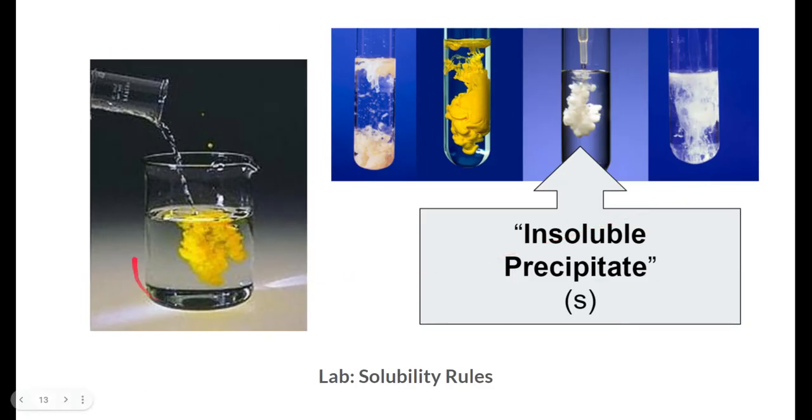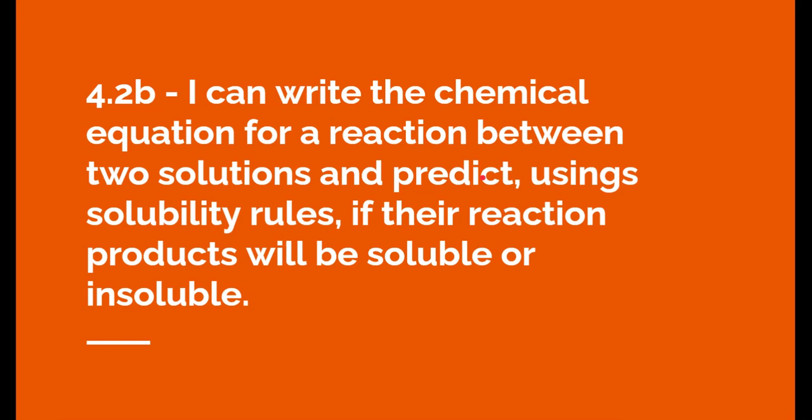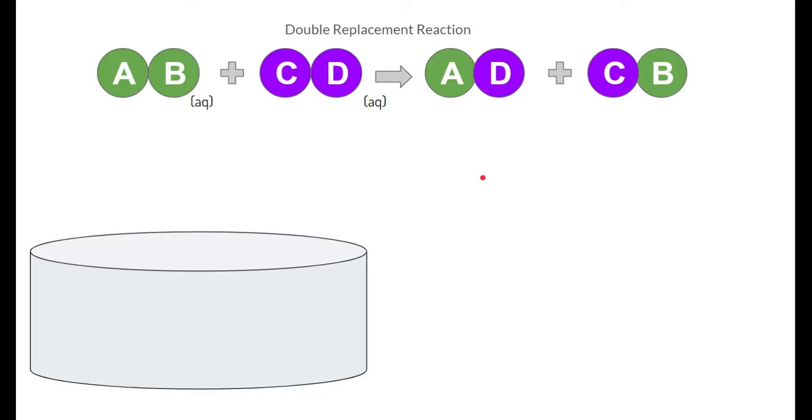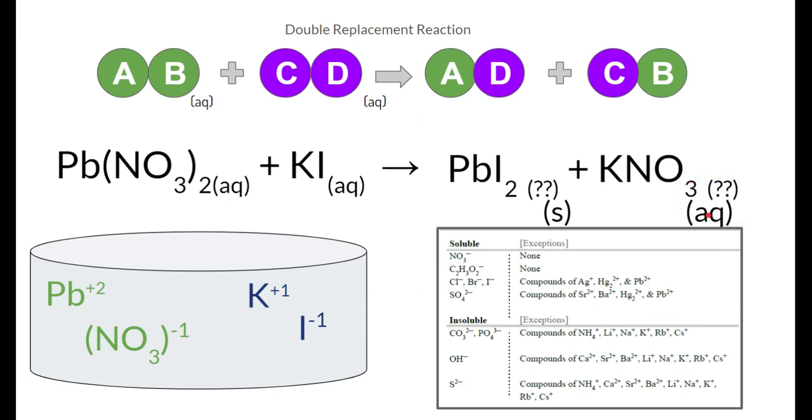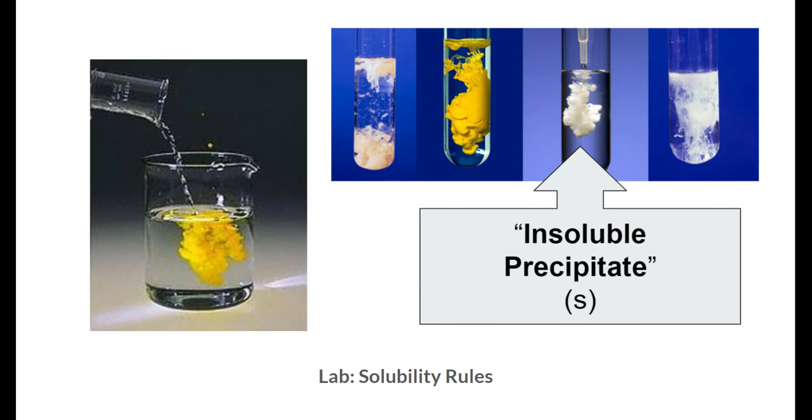Anytime you mix two solutions and they form something that is an insoluble substance, we call that a precipitate. We designate it with an S. I can write the chemical equation for a reaction between two solutions and predict using solubility rules if their reaction product will be soluble or insoluble. If both products turn out to be aqueous, then no reaction happened at all, and everything would just remain clear or colorless.